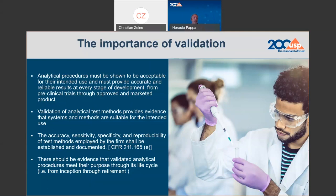There should be evidence that the method that we have validated one time at the beginning maintained this state of validation through the life cycle, which means from the inception of the method through the retirement of the method. This is something that is not well represented in the current validation scheme, but it is an important piece in the idea of the method life cycle management.